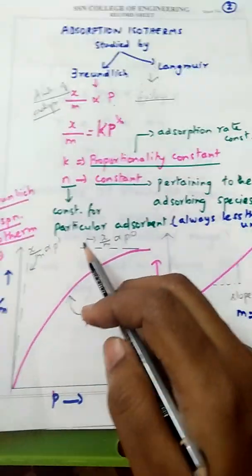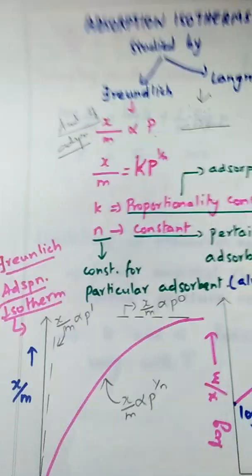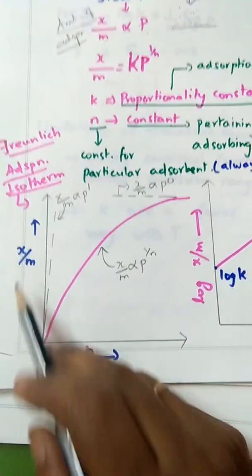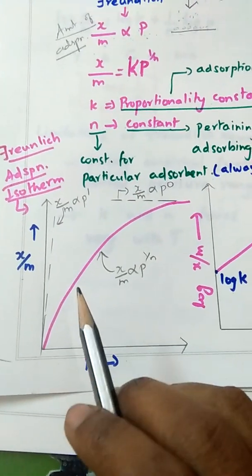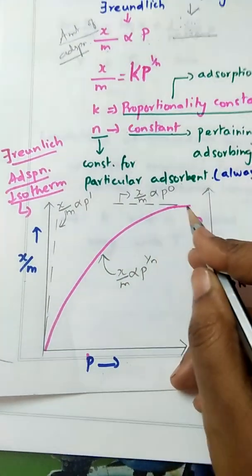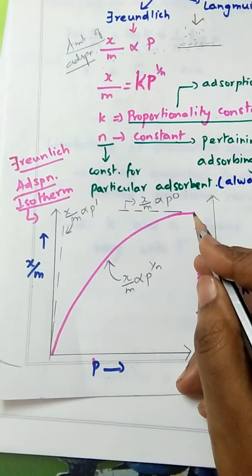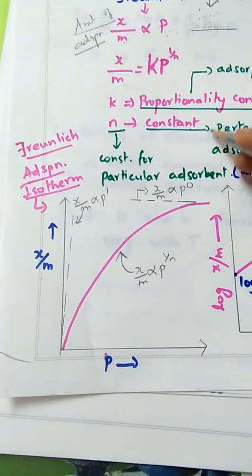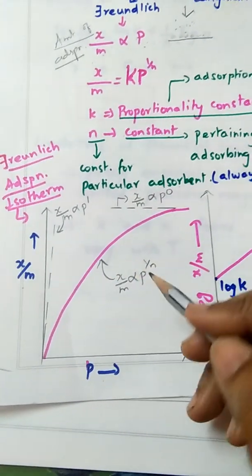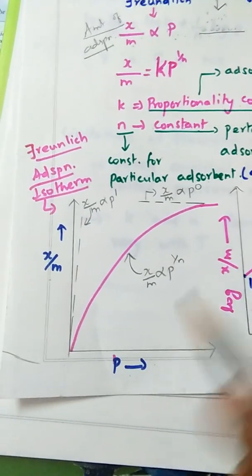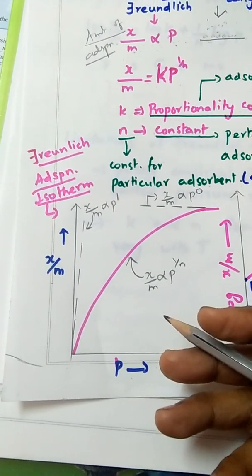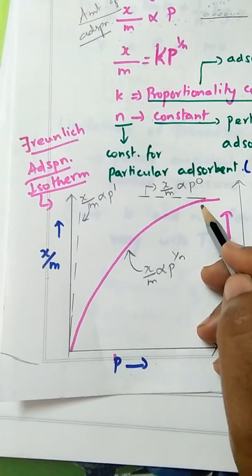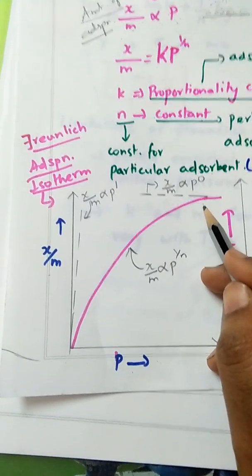The value of n is usually less than unity. Freundlich drew a graph between x/m and pressure, with pressure on the x-axis and x/m on the y-axis — this is an isotherm because it is observed at constant temperature. As pressure increases, the amount of adsorption also increases. However, there is a plateau in the graph because there is no more space available on the adsorbent for adsorbate molecules to get adsorbed. So however much the pressure is increased, adsorption cannot increase further — hence the plateau.